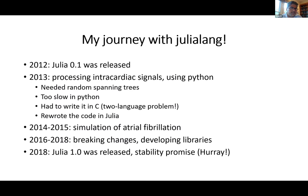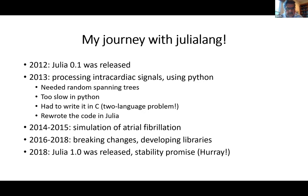I just want to give a quick overview of my personal Julia journey. Julia was released in 2012. In 2013, I was working on processing intracardiac signals for atrial fibrillation in Python. As part of the algorithm I needed to generate lots of random spanning trees, which Python couldn't handle efficiently, so I had to write that part in C and then connect it to Python. That's the two-language problem in practice — doable, but not a pleasant experience.